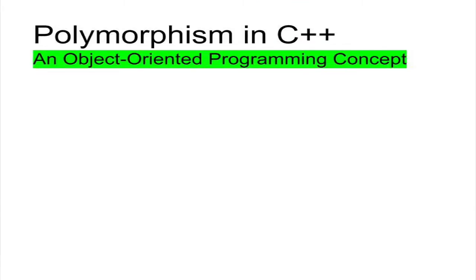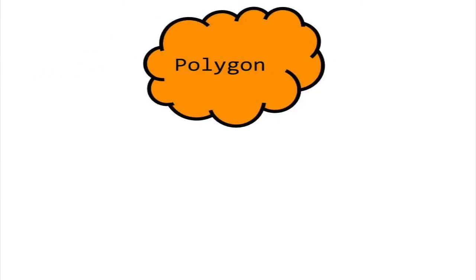In this tutorial, we will be looking at polymorphism in C++. Like inheritance and composition, polymorphism is another fundamental concept in object-oriented programming.